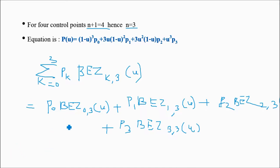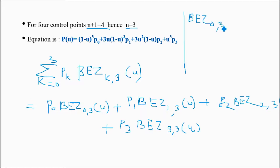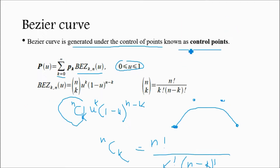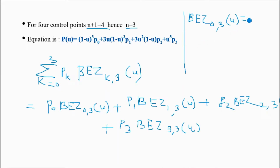Now we will calculate each Bezier basis function. Bezier(0,3)(u) equals 3C0 times u raised to 0 times (1 minus u) raised to 3, which equals 1 times 1 times (1 minus u) cubed, giving us (1 minus u) cubed.